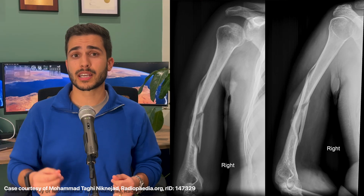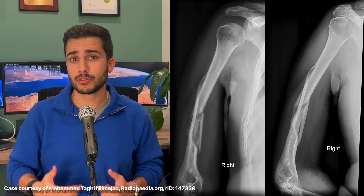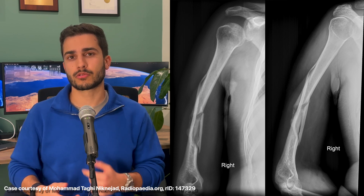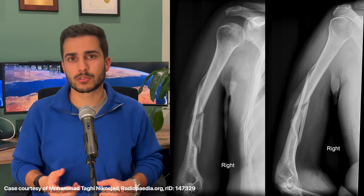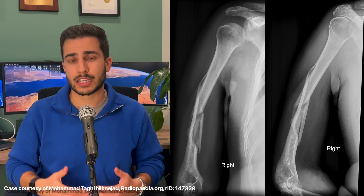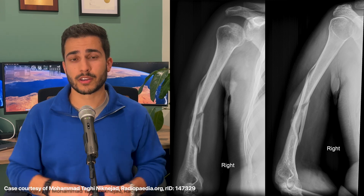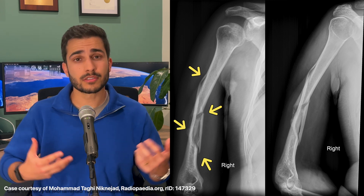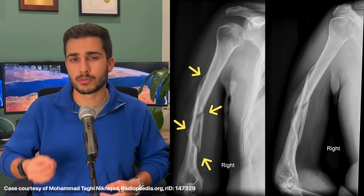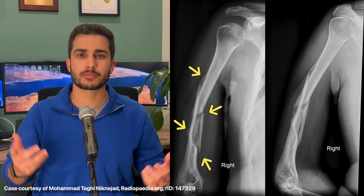Here's another example of a comminuted fracture, again of the humerus, this time on the right side. The patient presented with trauma, and you can see the trauma was quite severe. There are multiple bone fragments along the shaft of the humerus, with most of the bone fragments being mildly displaced.